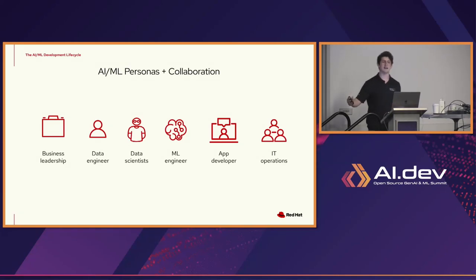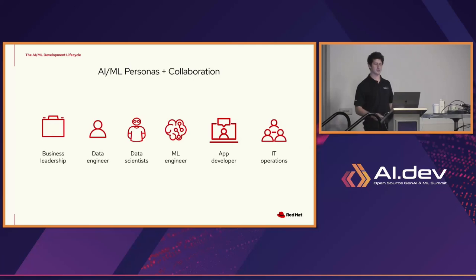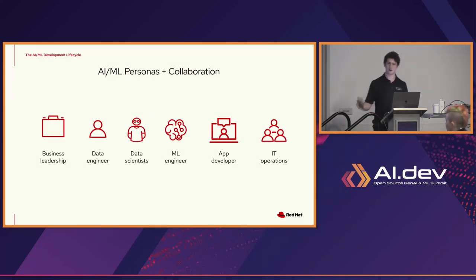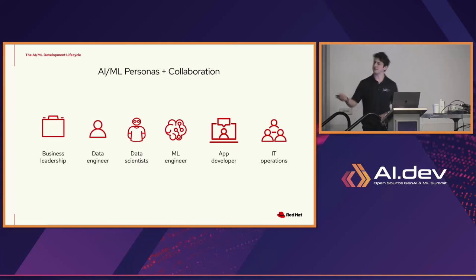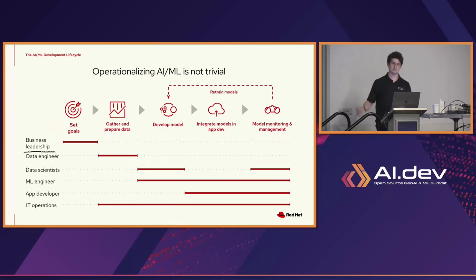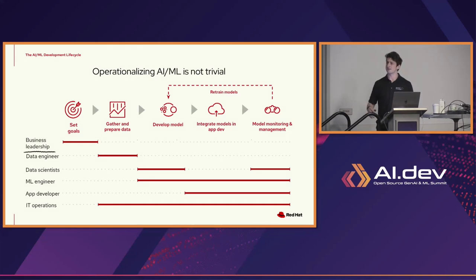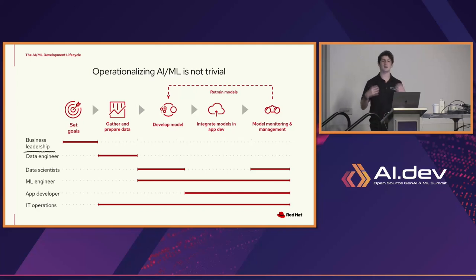Let's look at some of the key roles. Business leadership defines goals and metrics. Data engineers gather and prepare the data. Data scientists use JupyterHub, TensorFlow, and PyTorch. Application developers deploy models with applications, whether Flask apps or gRPC calls. ML engineers and IT operations handle monitoring and management. The challenges organizations face are very different from the research space — it's about how to take what you want to do with AI and actually operationalize it.